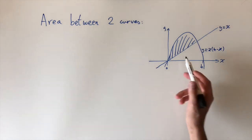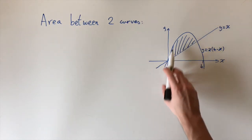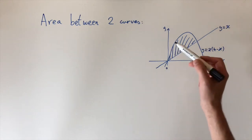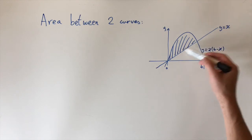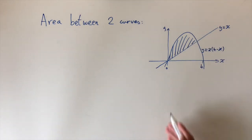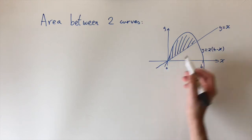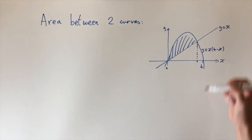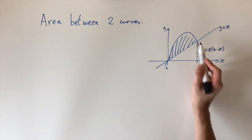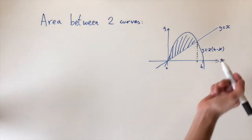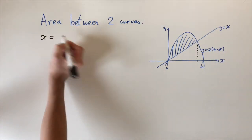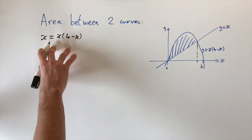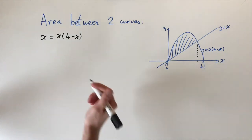For this example, we have two functions: a quadratic y = x(4 − x) and a straight line y = x. The problem is to find the area between these two functions in the shaded region. The area integral runs between zero and the intersection point, but we don't know that intersection point yet. So the first part is to work out where these two functions intersect by setting them equal: x = x(4 − x).